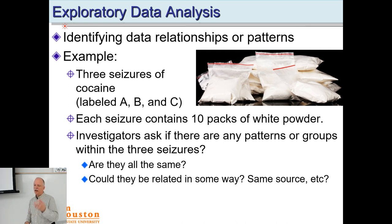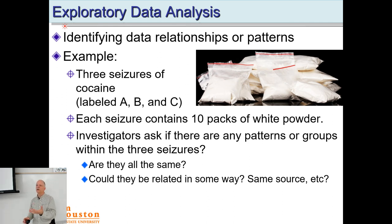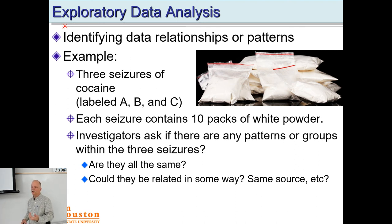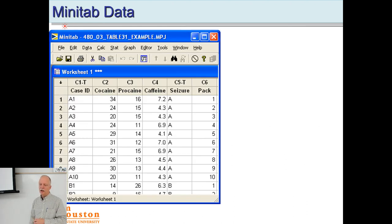Each seizure group has 10 packs of white powder. Since they were grouped distinctly, we're treating them as three different groups and testing all 10 in each. We have 30 total samples. The investigator specified these are three distinct groupings, so we ask: could they be the same source, or were they from different batches? That's the question we're trying to answer.